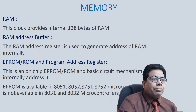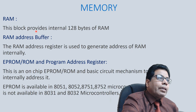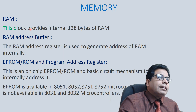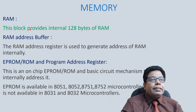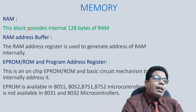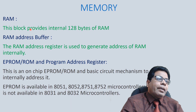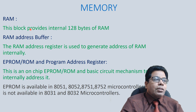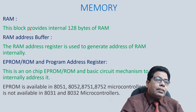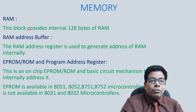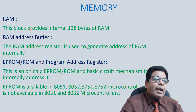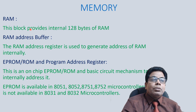Regarding memory, the first block is the RAM block, which provides internal 128 bytes of RAM. The RAM address buffer is used to generate the address of RAM internally. There is also an on-chip EPROM/ROM and program address register — an on-chip EPROM/ROM with basic circuit mechanisms to internally address memory. EPROM is available in 8051, 8052, 8751, and 8752 microcontrollers, but is not available in 8031 and 8032 microcontrollers.